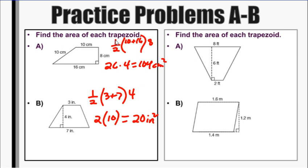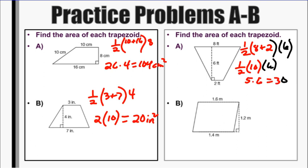Next one, we have half times base one is eight, plus base two is two, times the height is six. So now let's do half times ten times six. Half of ten is five. Five times six is thirty. We would have 30 square feet.